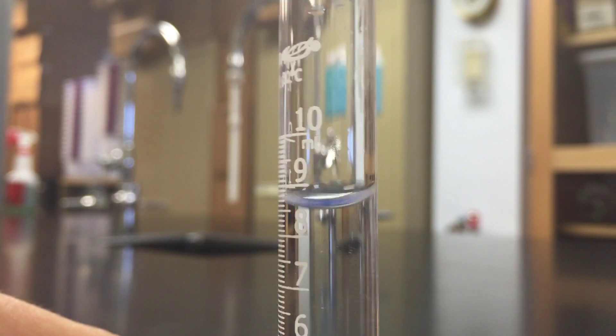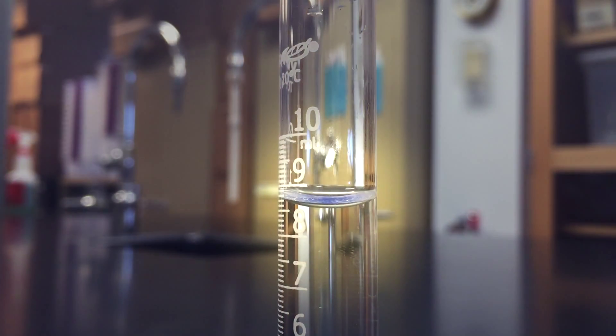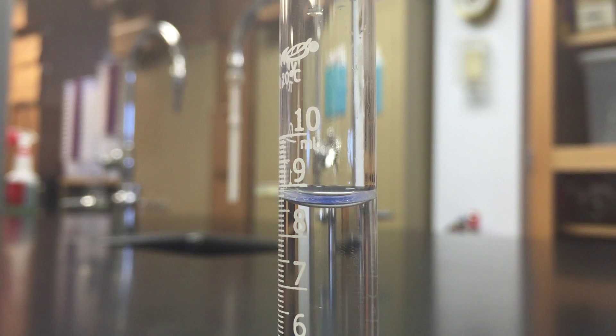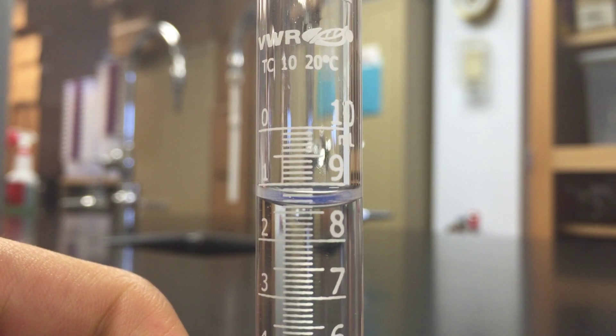Learning how to read a meniscus is a very important lab skill. You have to be at eye level to read one, and you always look for the bottom of the curvature. Sometimes it helps to put your finger behind it so that you can see the exact number better. In this case, it's about 8.59 or 8.6.